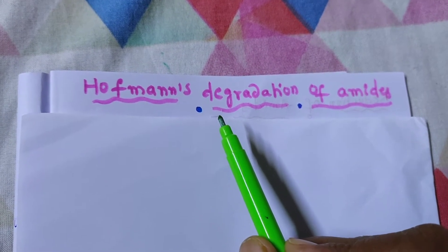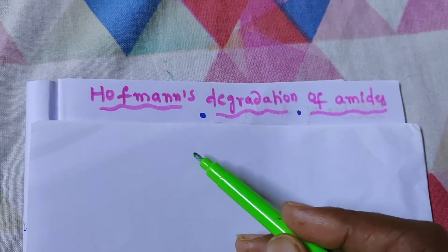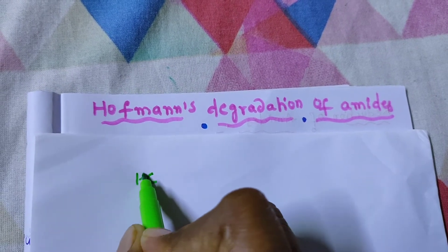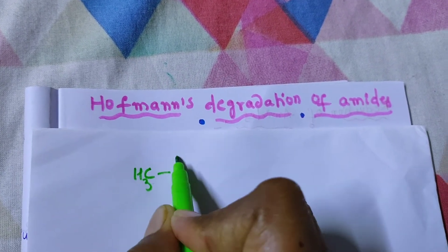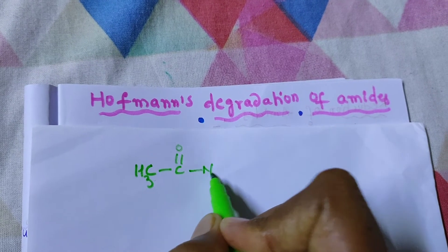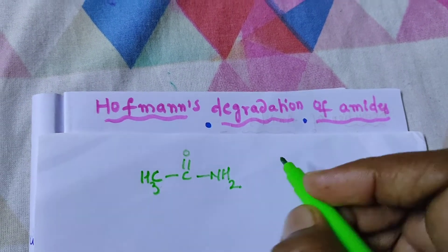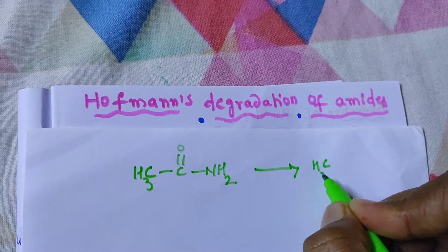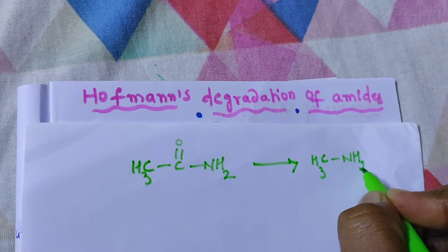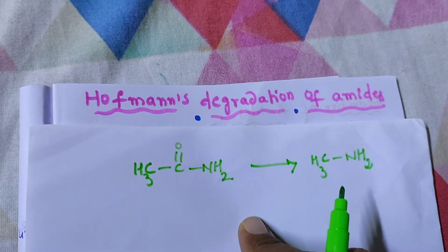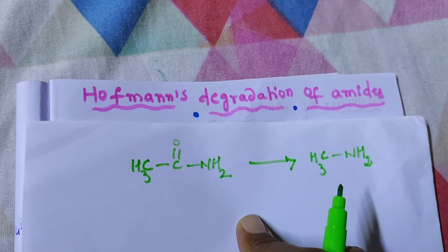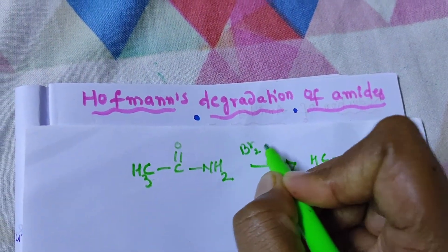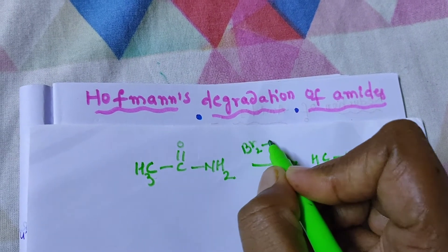What is this reaction? The Hofmann reaction converts amides, for example CH3CONH2. Amides convert into an amine, this reaction gives CH3NH2 with loss of carbon atom. The reagent that you need is halogen under alkaline conditions.